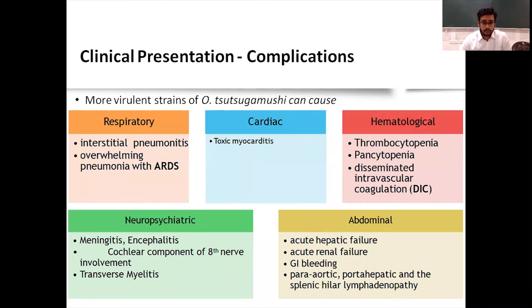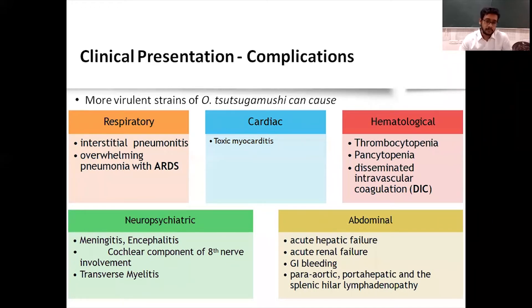Coming to complications: more virulent strains of Orientia tsutsugamushi can cause respiratory illness like interstitial pneumonitis or ARDS. Cardiac involvement can cause toxic myocarditis. Hematologically, it causes thrombocytopenia and pancytopenia. Disseminated intravascular coagulation can occur. Neuropsychiatric complications include meningitis, encephalitis, cochlear nerve involvement, and transverse myelitis. Abdominal complications include acute hepatic failure, acute renal failure, GI bleeding, peritonitis, and splenomegaly. Scrub typhus affects almost all organ systems.